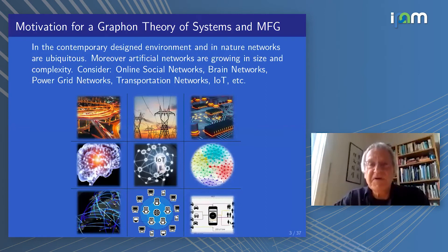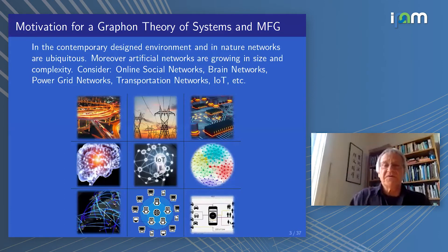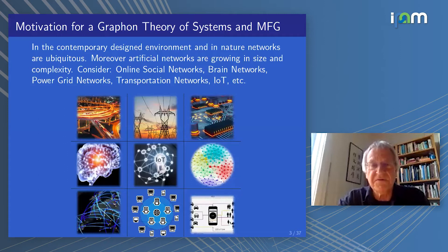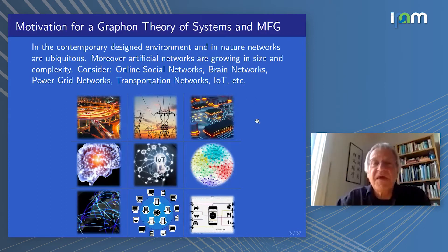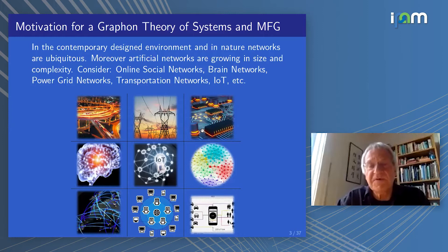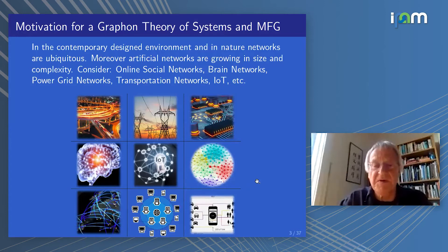The motivation for Graphon Theory of Systems and Mean Field Games is that a lot of large population games, and indeed control, is conducted over networks. In the contemporary design environment and in nature, networks are ubiquitous. Moreover, artificial networks are growing in size and complexity. In this commercial set of images we've got a road network, electrical grid, a computer board, the human brain — the non-artificial element on this list — and cell phone networks and social networks and so on.